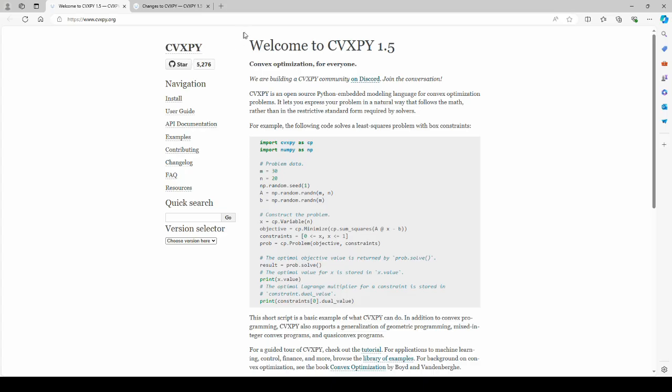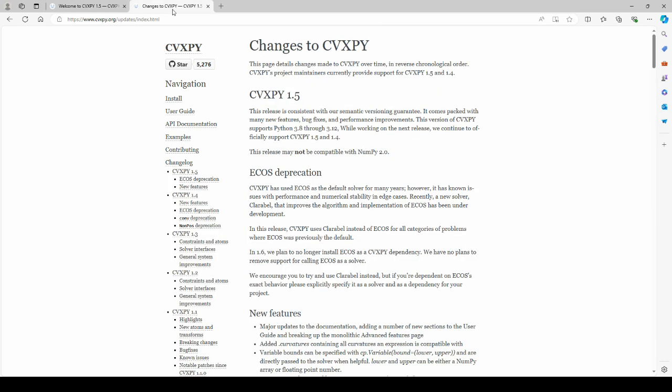In this tutorial we will use the CVXPY library which is a Python embedded modeling language for convex optimization problems. Starting from version 1.5, CVXPY uses Clarabel as default solver. Clarabel is also an interior point solver. CVXPY can be installed using pip.